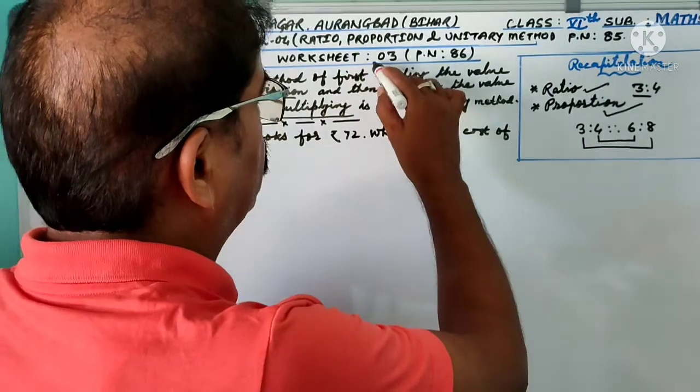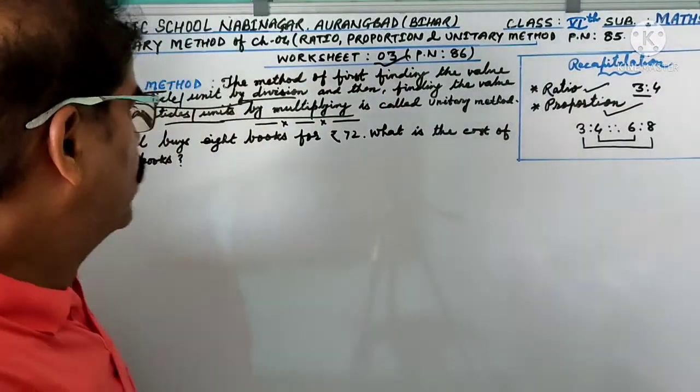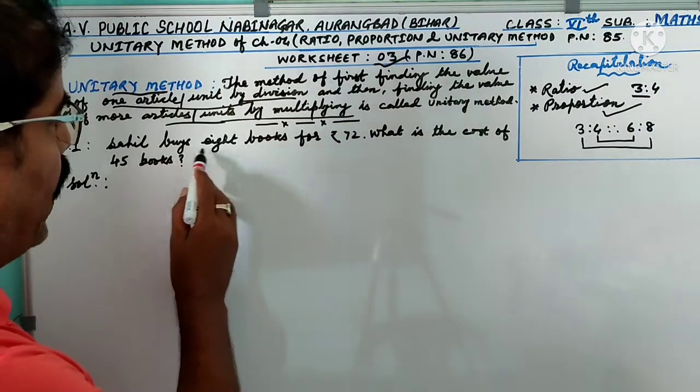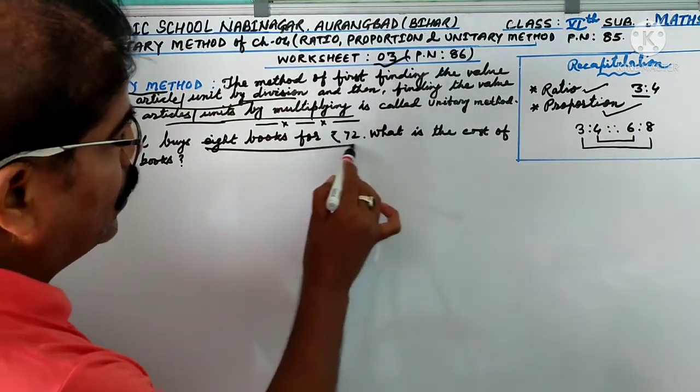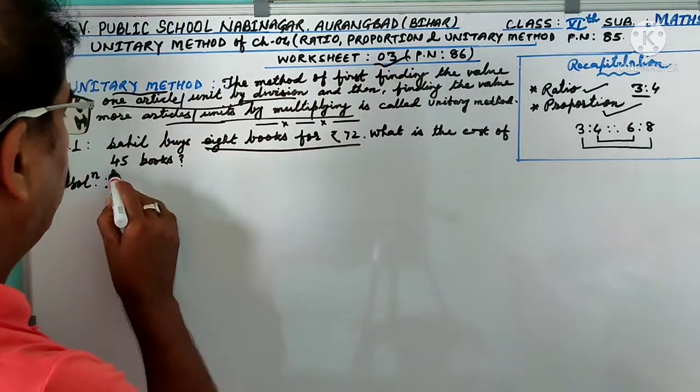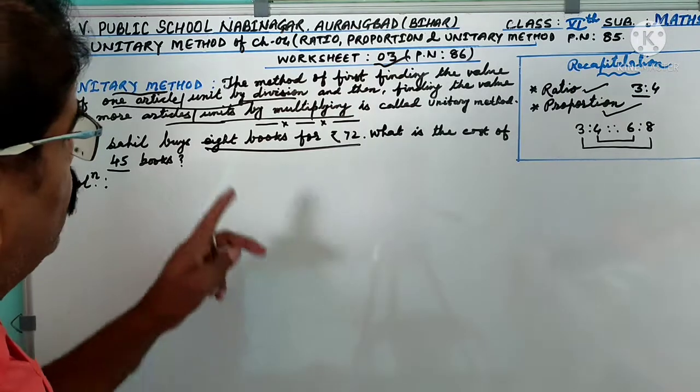I am going to start worksheet 3, question number 1. Your first question: If I buy 8 books for rupees 72, what is the cost of 45 books?